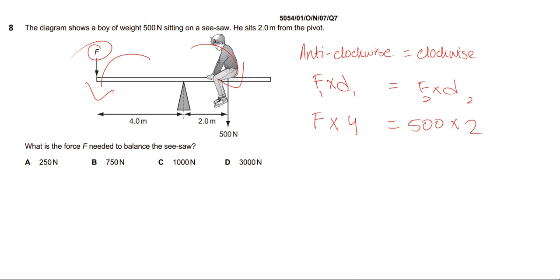We will solve this by applying cross-multiplication. 500 multiplied by 2, then you will have 1000 divided by 4. F equals 250 Newton - that is the answer.